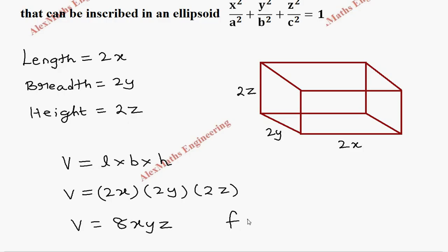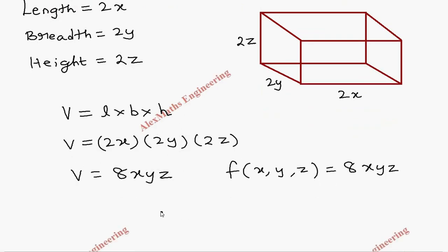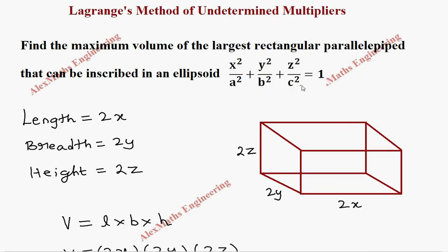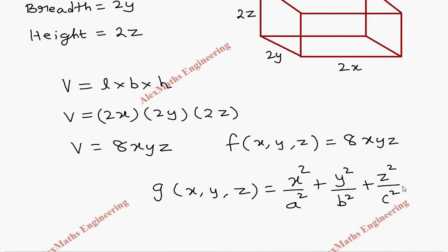Let us take f(x, y, z) = 8xyz. And from the ellipsoid equation we take g(x, y, z) = x²/a² + y²/b² + z²/c², and we have this equal to 1. Let us bring the 1 to this side, so minus 1.